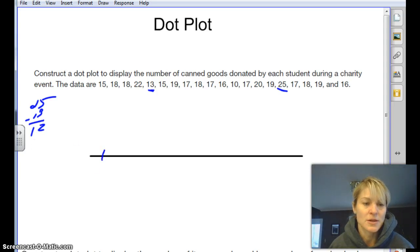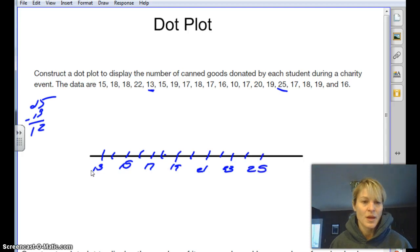We can start at 13 here and then go 14, 15, 16, 17, 18, 19, 20, 21, 22, 23, 24, and 25. Hopefully yours looks a little bit neater than mine. So we want to label this. We're going to put number of cans donated.